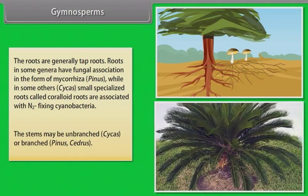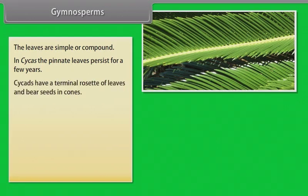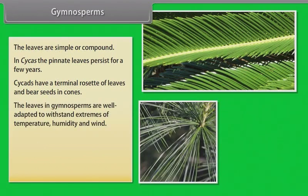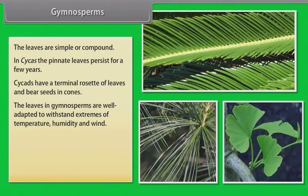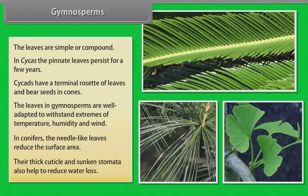The stems may be unbranched like Cycas or branched like Pinus and Cedrus. The leaves are simple or compound. In Cycas the pinnate leaves persist for a few years. Cycads have a terminal rosette of leaves and bear seeds in cones. The leaves in Gymnosperms are well adapted to withstand extremes of temperature, humidity and wind. In conifers, the needle-like leaves reduce the surface area. Their thick cuticle and sunken stomata also help to reduce water loss.